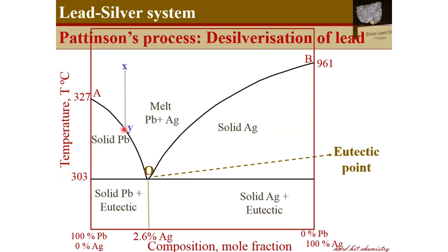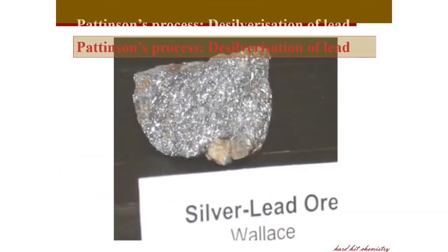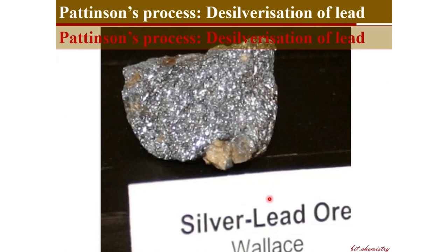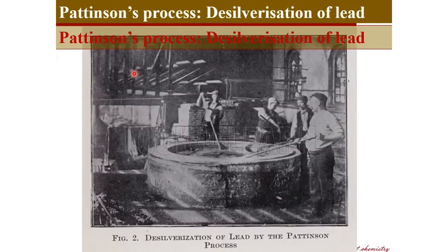This idea is used in Pattinson's process of desilverization of lead — the removal of silver from lead — applied in metallurgy when lead and silver must be separated. The ore for lead is always present mixed with silver. To separate lead from silver, the melt of this ore is cooled down. At a certain temperature, when it reaches the freezing point of lead at that composition, lead starts to solidify and is removed. As equilibrium shifts, more lead solidifies and is separated, thus desilverizing the lead. This is an important application of phase equilibrium in metallurgical processes.